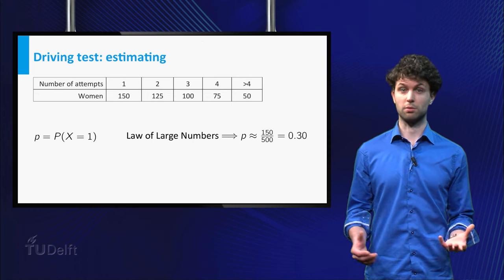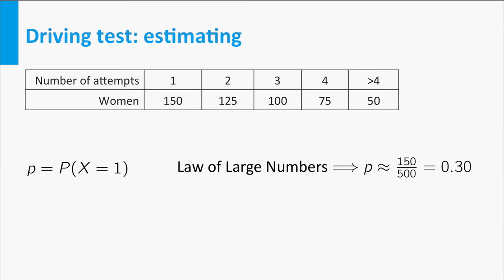Well, P is just the probability that X equals 1. So by the law of large numbers, we could estimate P by the number of women that passed directly with our first test, divided by the total number of women. For the given data, this equals 0.30.